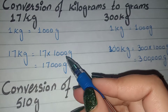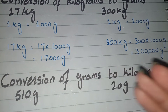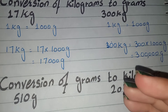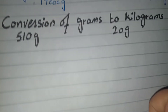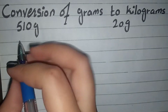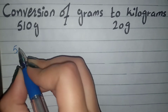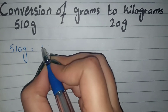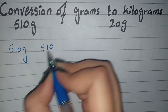When you have to convert grams to kg, we have to divide by 1000. For example, 510 grams — to convert to kg, we will divide by 1000.